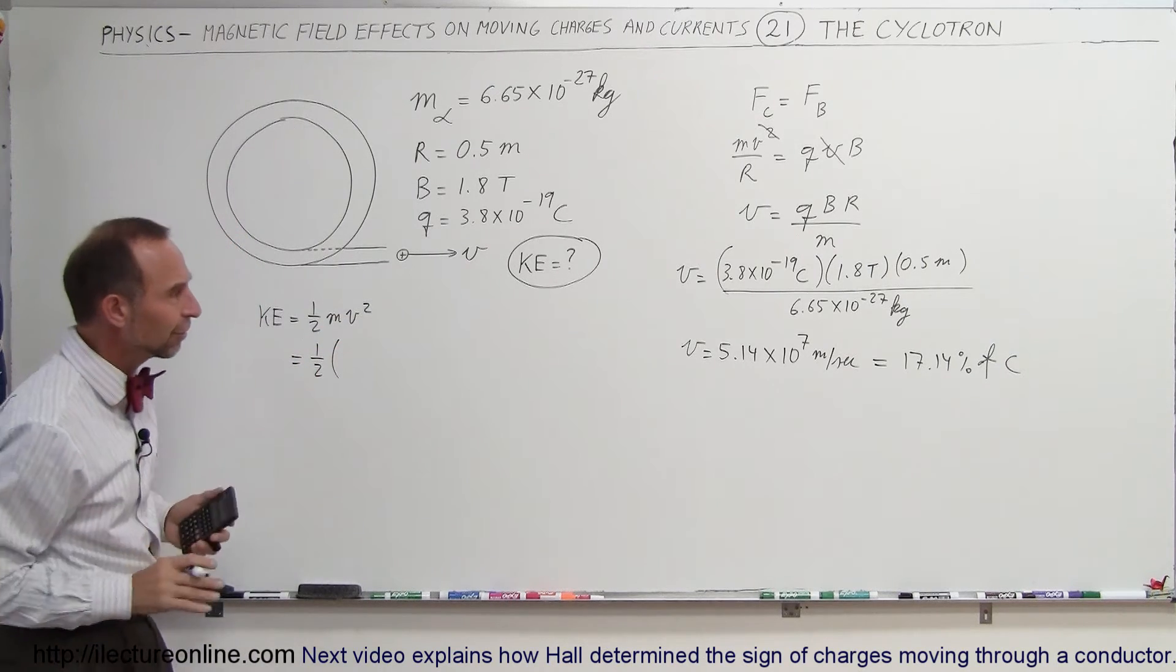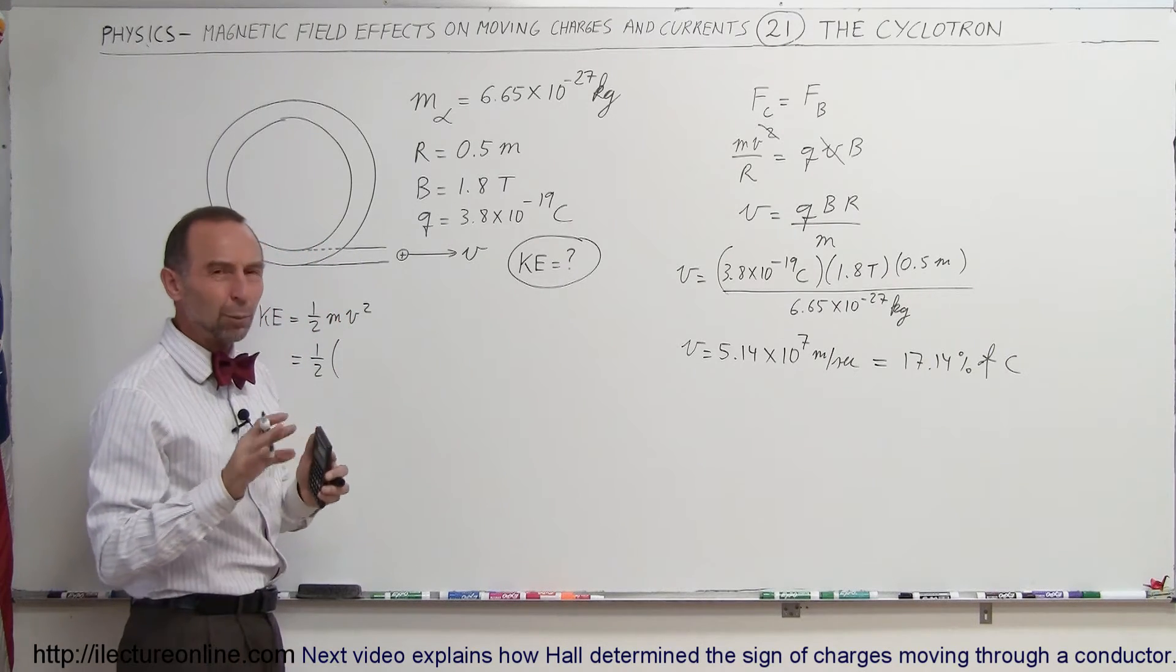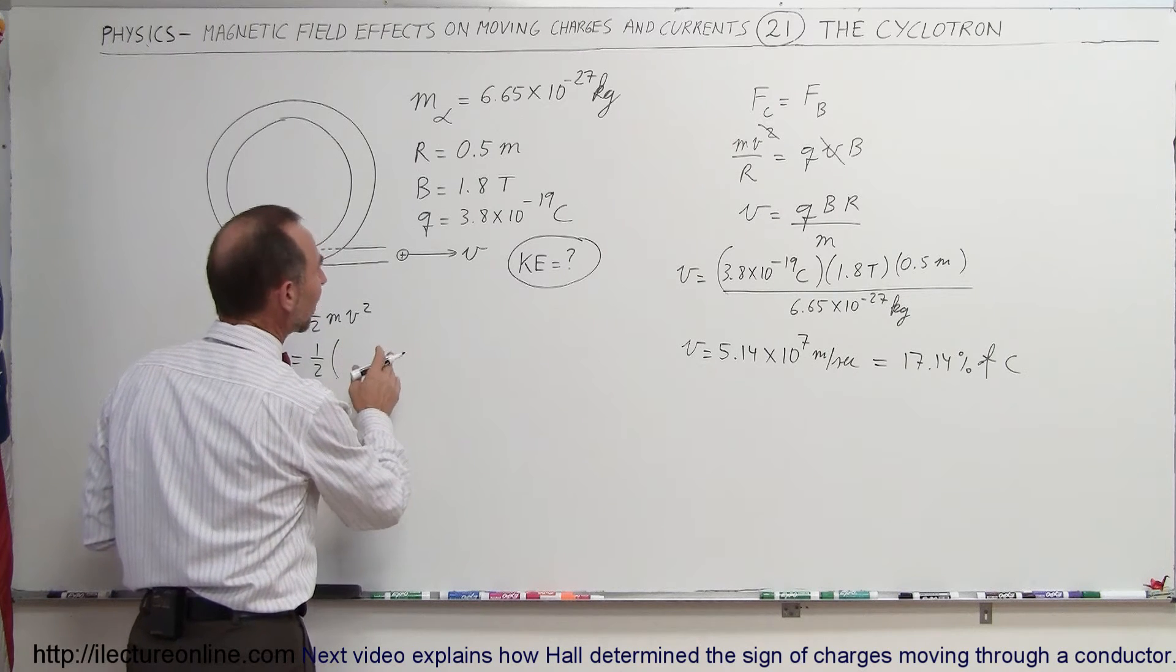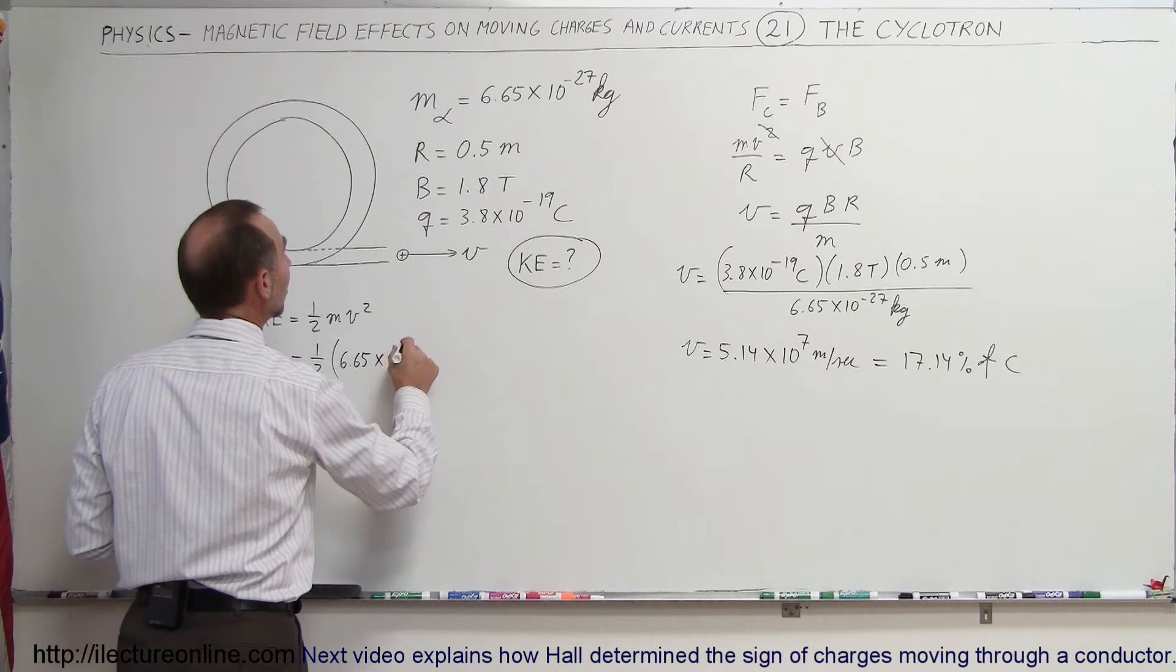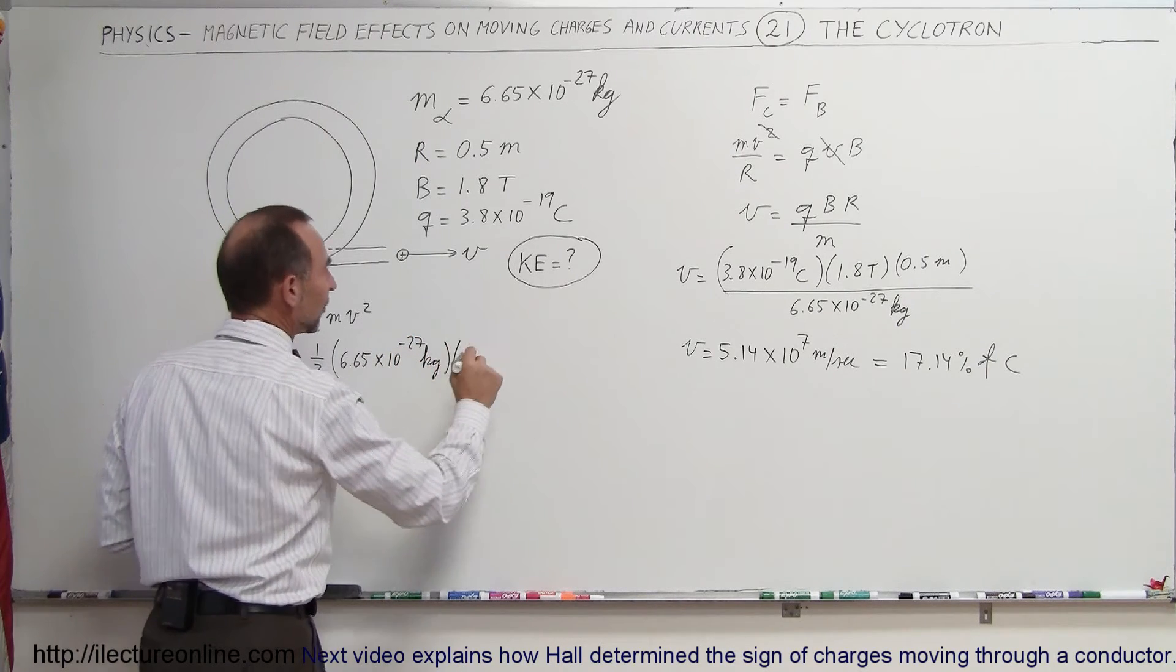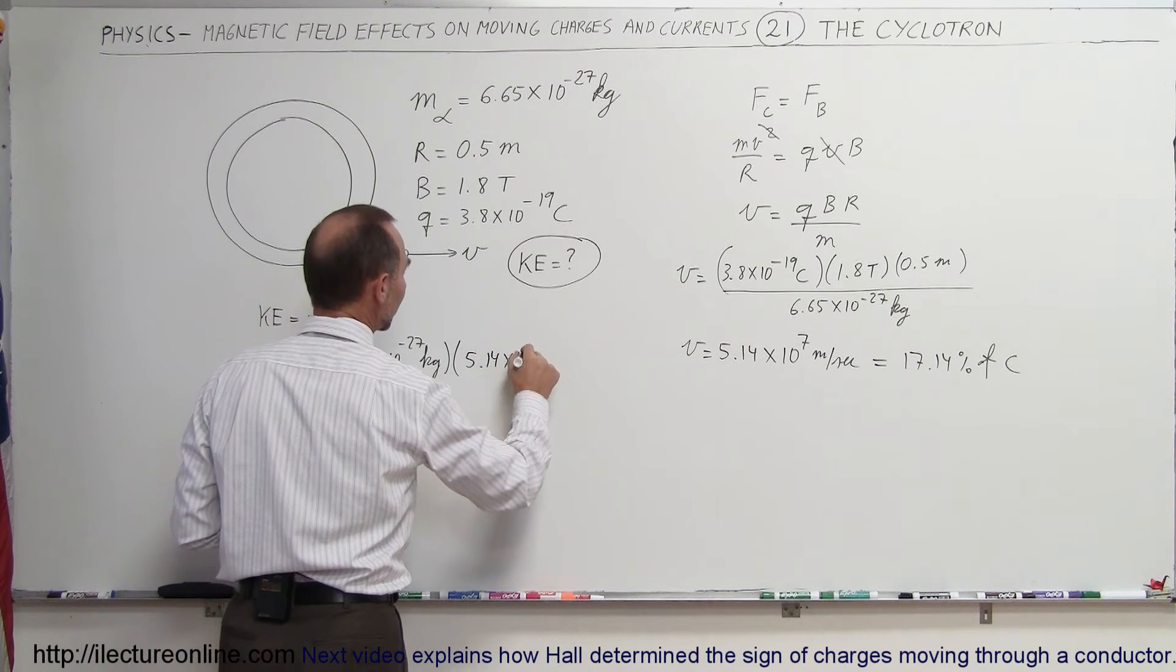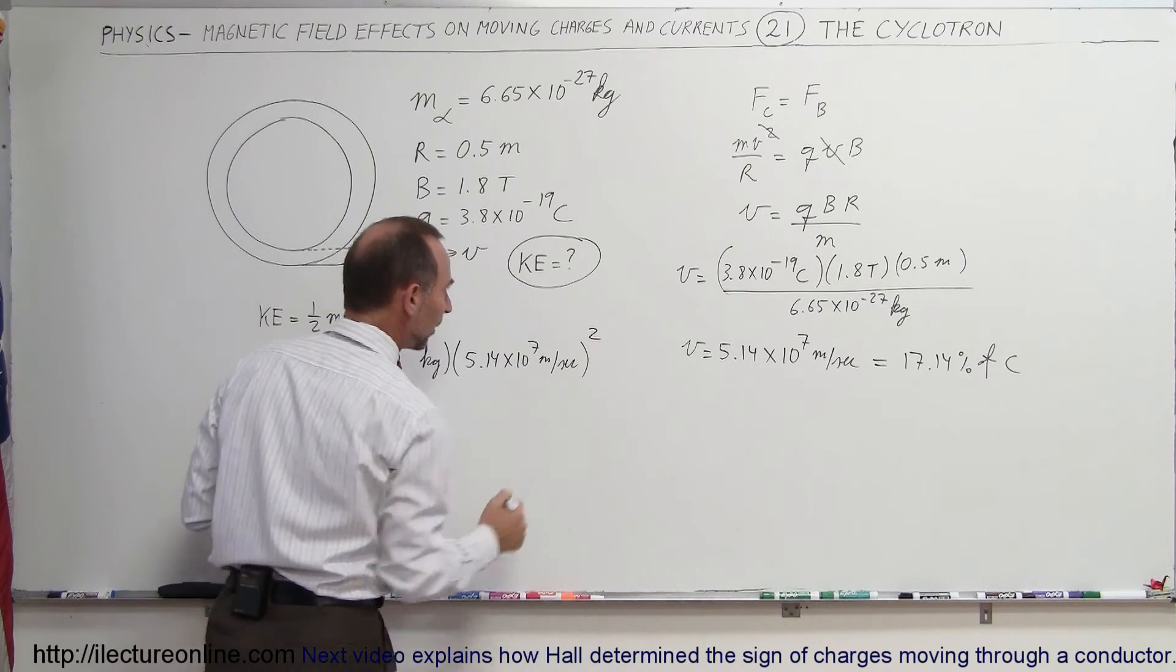And let's assume first that there's no relativistic effects. And at 17% of the speed of light, it's probably only about 1% or so. It's probably not a lot. So the rest mass would be 6.65 times 10 to the minus 27 kilograms. And then we multiply times velocity squared, which is 5.14 times 10 to the 7 meters per second. We have to square that.